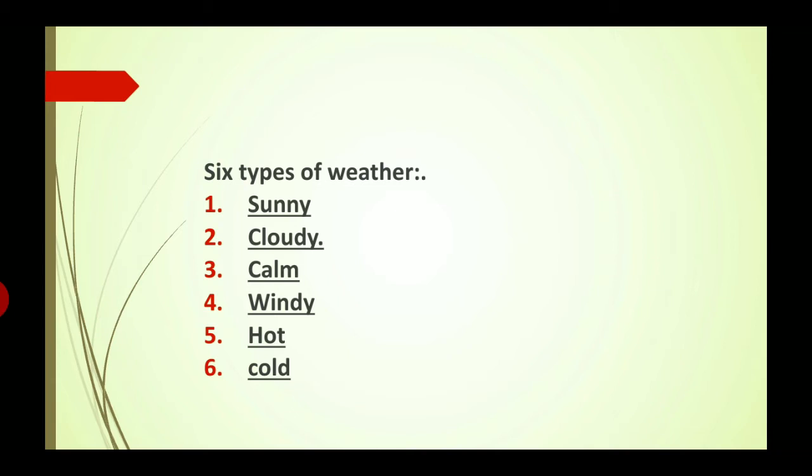Fifth one is Hot — hot weather feel kerti hai jub garmi hoti hai, bhoot zyada garmi hoti hai. Sixth one is Cold — cold weather. So we feel six types of weather: first Sunny, second Cloudy, third Calm, fourth Windy, fifth Hot, sixth Cold. Spelling: S-U-N-N-Y, C-L-O-U-D-Y, C-A-L-M, W-I-N-D-Y, H-O-T, C-O-L-D. These are six words we put in the second line.